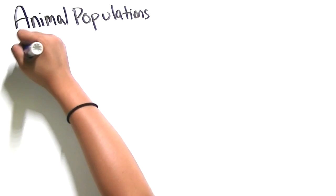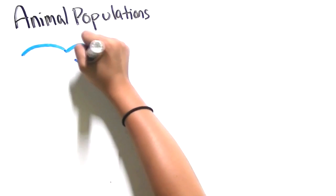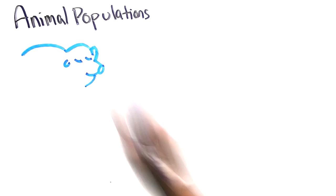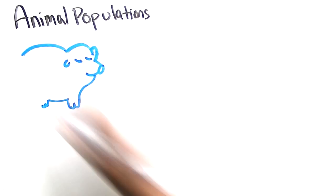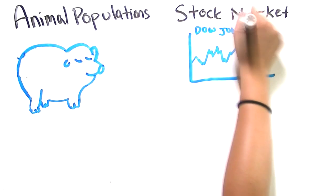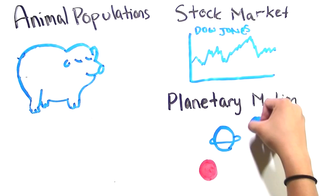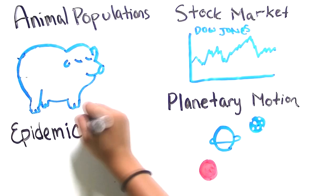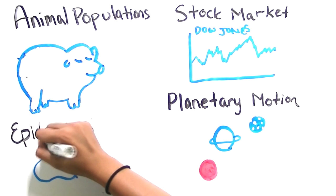But it's not just weather that shows chaotic behavior. We can find examples of chaotic behavior in animal populations, the stock market, planetary motion, epidemics, and so much more.